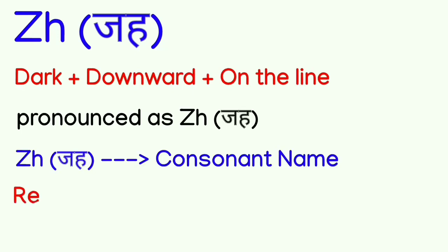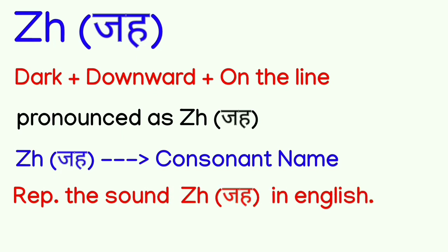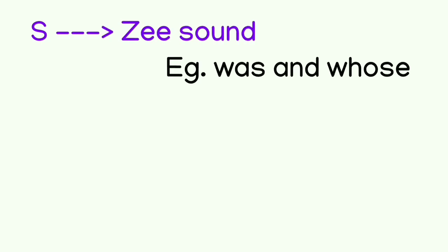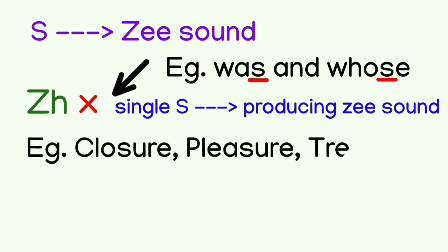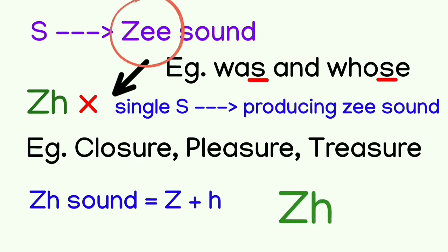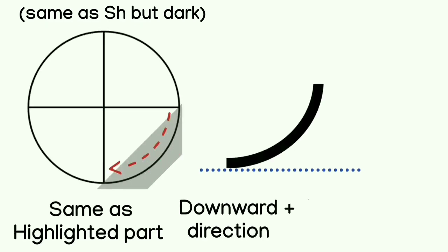The next and last consonant is ZHA. This dark consonant is made in the downward direction on the line. It represents the ZH sound in English — like closure, pleasure, treasure. Now, when we learned the Z consonant, S is sometimes pronounced like Z — such as in 'was' and 'whose' — we don't use ZHA there because it is a single S sound. But in closure, pleasure, and treasure, the sound is ZH, which is slightly different from Z. So wherever the ZH sound appears, we use the ZHA consonant. We draw the consonant like SHA but dark, in the downward direction.